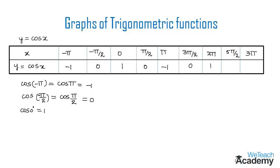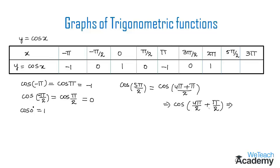For x equal to 5 pi by 2: we write cos(5 pi by 2) as cos(4 pi plus pi by 2), which simplifies to cos(2 pi plus pi by 2). This is in the form cos(360 degrees plus theta), which lies in the first quadrant where all ratios are positive, so cos(360 plus theta) equals cos(theta). Therefore cos(5 pi by 2) equals cos(pi by 2) equals 0.